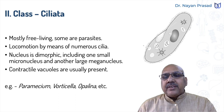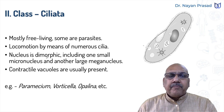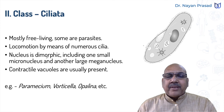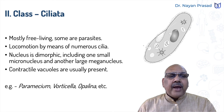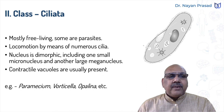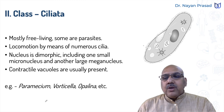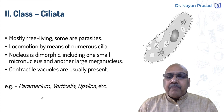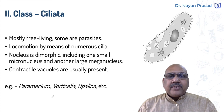In them, nucleus is dimorphic — 'di' means two, 'morph' means form. The nuclear apparatus includes two types of nuclei: one small and another large. The smaller one is called micronucleus and the larger one is called meganucleus. Contractile vacuoles are usually present. Here in Paramecium, we are seeing two contractile vacuoles. Common examples of class Ciliata are Paramecium, Vorticella, and Opalina.